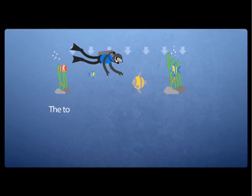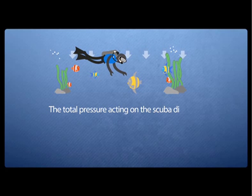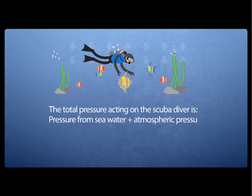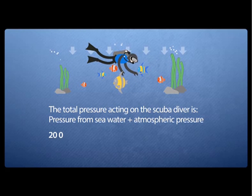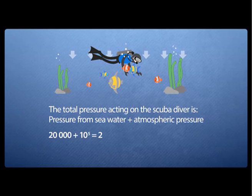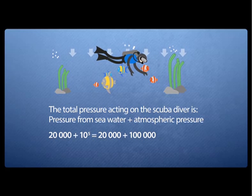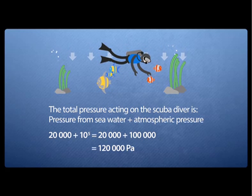But if that's your final answer, it's wrong. You must be careful in your exam. They've given you the value of atmospheric pressure, so you must add it in. The total pressure acting on the scuba diver is the pressure from seawater plus atmospheric pressure. Therefore, 20,000 Pascals plus 10 to the power of 5 Pascals gives you 120,000 Pascals.